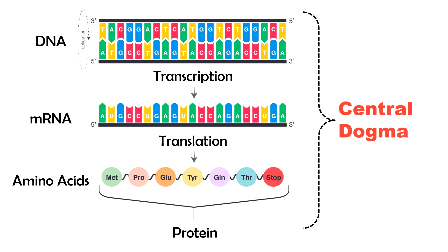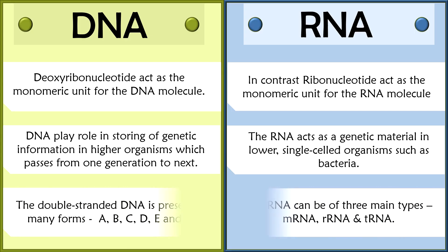DNA acts as a template for the central dogma, where its genetic information flows only in one direction — from DNA to RNA via transcription, and from RNA to protein via translation. DNA can be present in many forms including A form, B form, C form, D form, and Z form; among these, A, B, and Z are most dominantly found. On the other side, RNA can be of three main types: mRNA, rRNA, and tRNA.